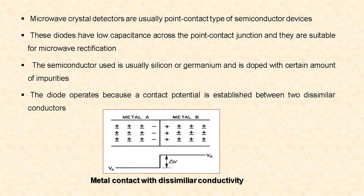Consider two metals A and B in contact, where metal B has more free electrons — that is, its conductivity is more than metal A, which has fewer free electrons. Electron flow takes place predominantly from B to A. After equilibrium is reached, A will apparently be charged more negatively and B will be more positive.